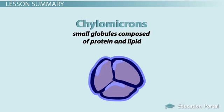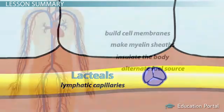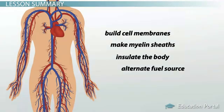Chylomicrons are small globules composed of protein and lipid. The chylomicrons first enter the lymphatic capillaries called lacteals before entering the general blood circulation. Fats are used to build cell membranes, make myelin sheaths, insulate the body, or serve as an alternative fuel source.